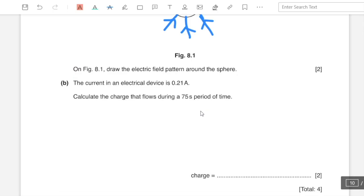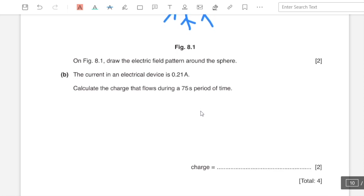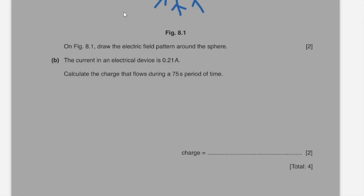Part b: the current in an electrical device is 0.21 amperes. Calculate the charge that flows during a 75 second period of time. Charge equals current into time, which equals 0.21 into 75 seconds, and that is equal to 16 Coulombs.